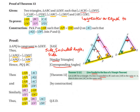Here is the proof of Theorem 13. We are given two triangles ABC and DEF such that angle ACB equals angle DFE — this angle here in red. Angle CAB equals angle FDE — this angle here in green. And angle ABC equals angle DEF — this angle here in orange.